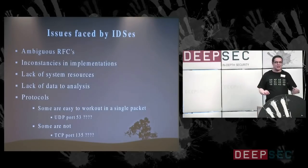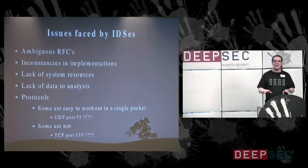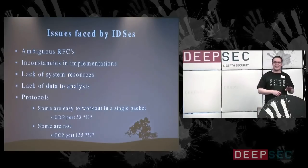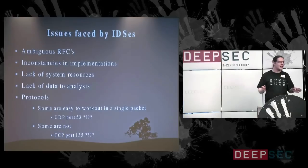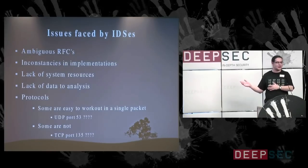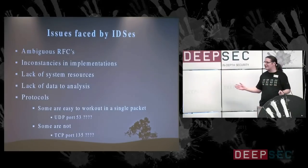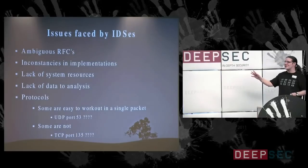It almost seems like there's some sort of pact where the IDS vendors got together and said, let's not fight on detection — let's fight on throughput. Most commercial vendors constantly talk about throughput. But who really cares about throughput? If you're buying a box that's supposed to protect your network, is that not what you're interested in? Lack of system resources: it's hard to analyze what you don't understand.